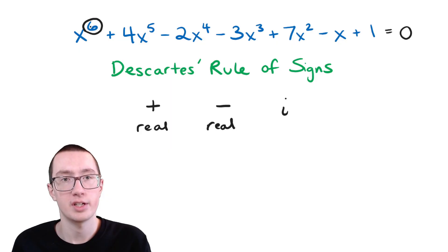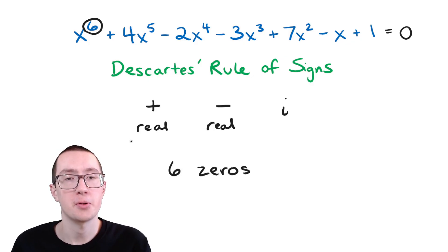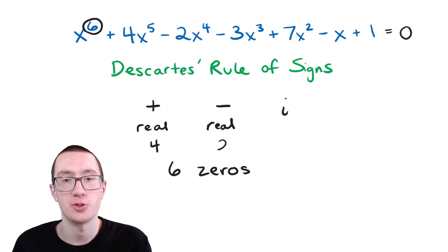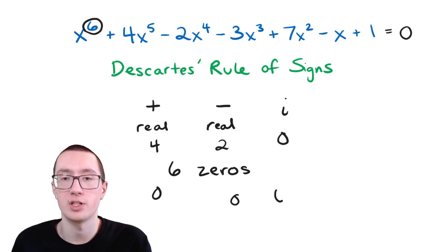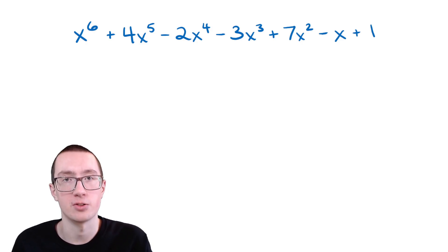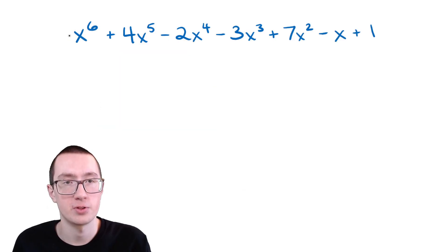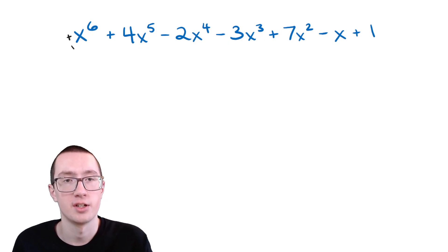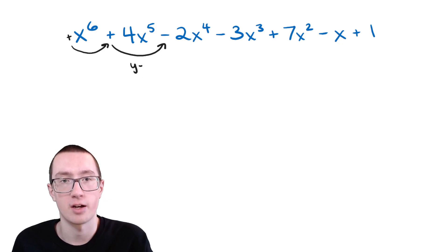So what's the biggest exponent here? Six is our biggest exponent, which means that in total we have to have six answers, or zeros. So instead of graphing this, which would take forever, we can use Descartes' rule of signs to determine the possible list of positive, negative, and imaginary answers. To find out how many positive real answers we have, we need to figure out how many times the sign changes. Remember that this first term is positive because there's no negative sign on it.